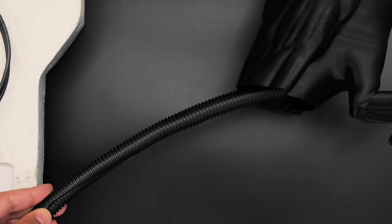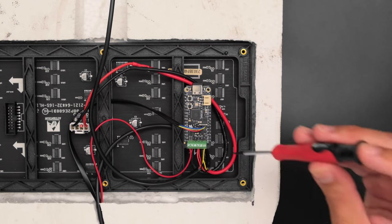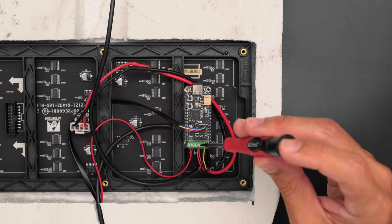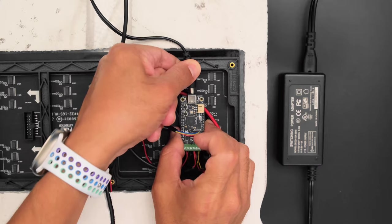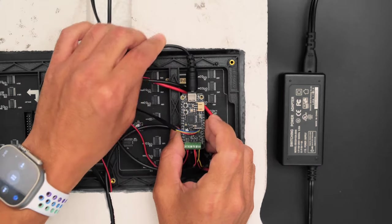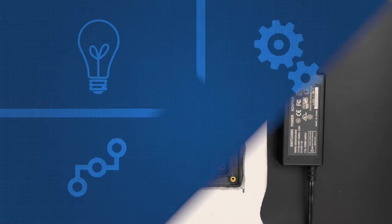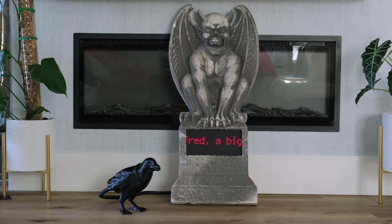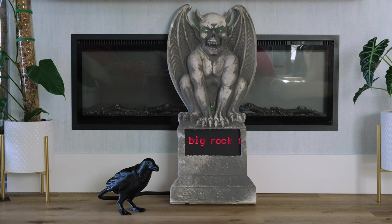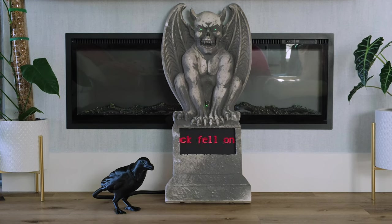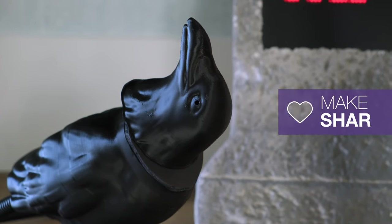The feather's onboard Stemma QT port and screw-block terminals make it easy to connect the various components. Everything gets powered by a 5-volt, 4-amp switching power supply so it can haunt all night. We had a lot of fun building this project and hope it inspires you to check out Adafruit's RP2040 Prop Maker Feather and CircuitPython.